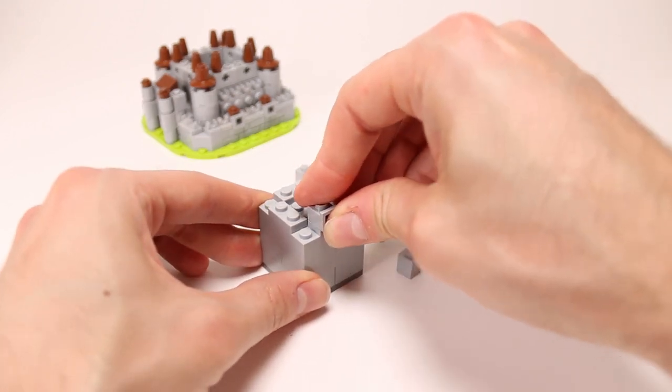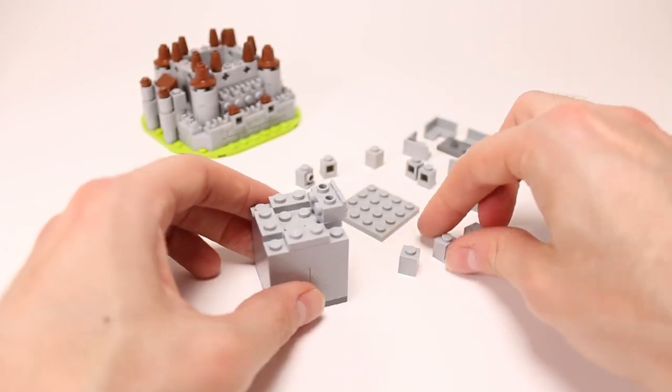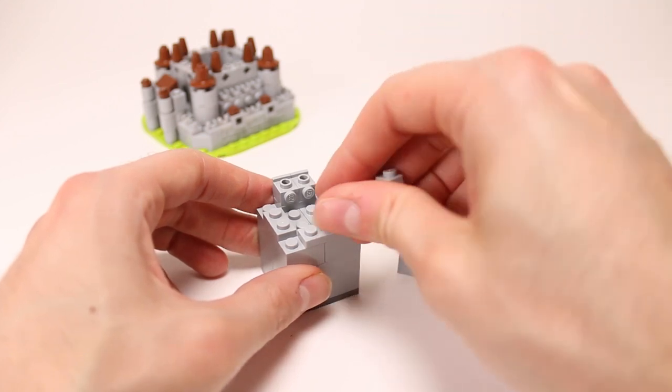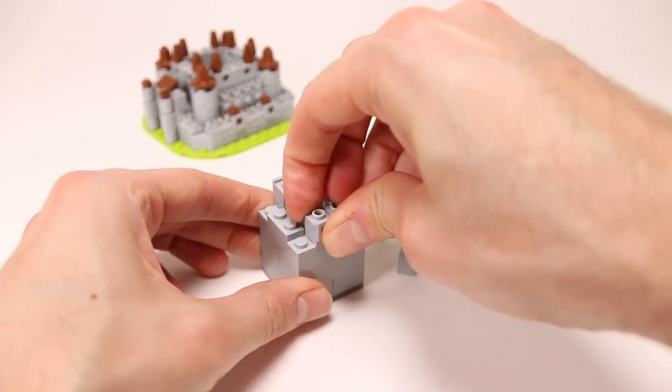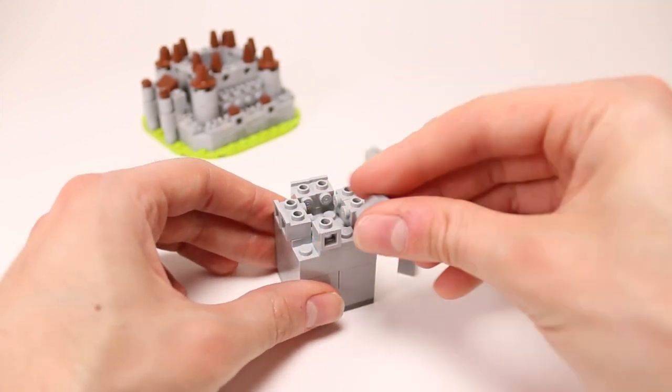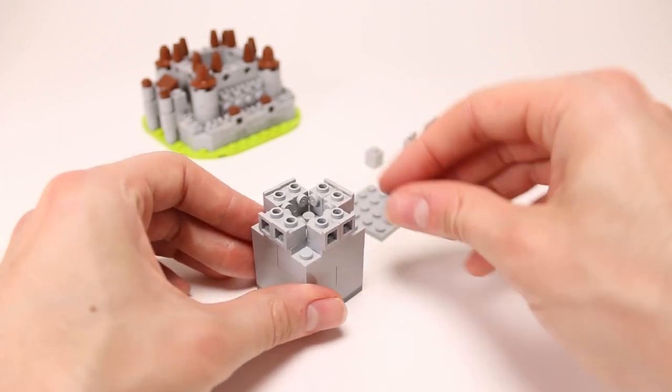Like our windows before, we're going to take these headlight bricks and turn them on their side. And whether you're building a house or a castle or anything that has windows, these headlight bricks are a great way to create little window frames on the outside of your buildings.